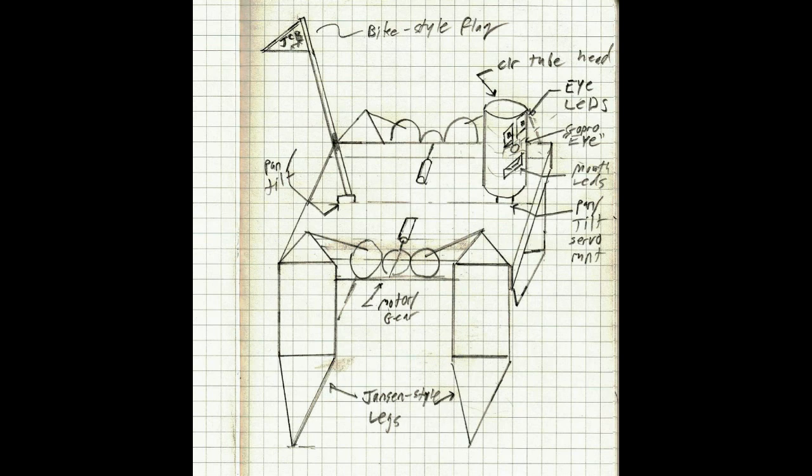What you see here is a crude drawing of what I intend to make this beast do. You've got your motors and gears and your Jensen style legs which you've already seen. On top you've got a bike flag or kind of a tail and a clear head made out of polycarbonate tubing.